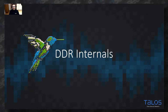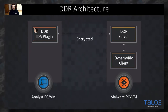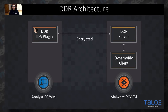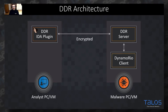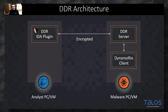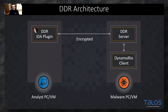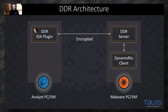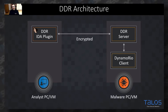Let me talk about the architecture of DDR. It is highly recommended to use the plugin on one machine and run the DDR server and the DynamoRIO client on a separate machine. Keep in mind that we are actually executing malware during instrumentation, and you probably don't want to do that on the same machine where your IDA license is running. We highly recommend using two virtual machines — one with IDA, another with the server component and the instrumentation DLL.